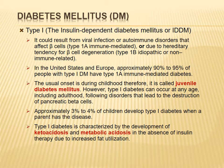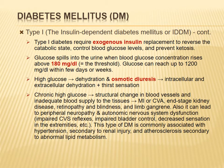A notable feature of Type 1 is the rapid development of ketoacidosis and metabolic acidosis. These patients live on insulin injections because the pancreas does not secrete insulin. If a dose is delayed or missed, within hours the child can develop ketoacidosis or metabolic acidosis.